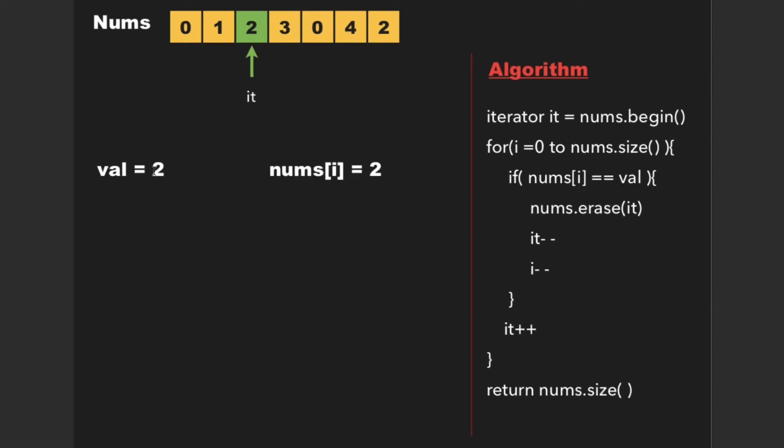Now again we have encountered a 2, so val and nums[i] both are equal, so we can again erase it from the nums array. Again, while doing so, the it value points to the next location, so we need to decrement it.